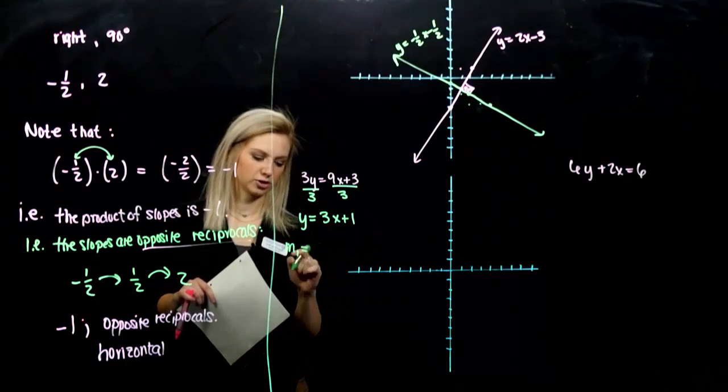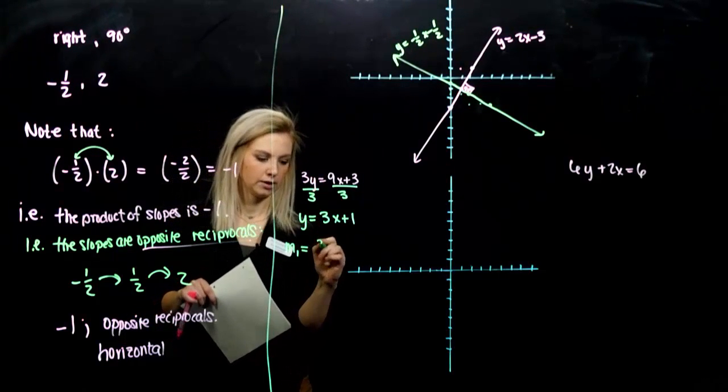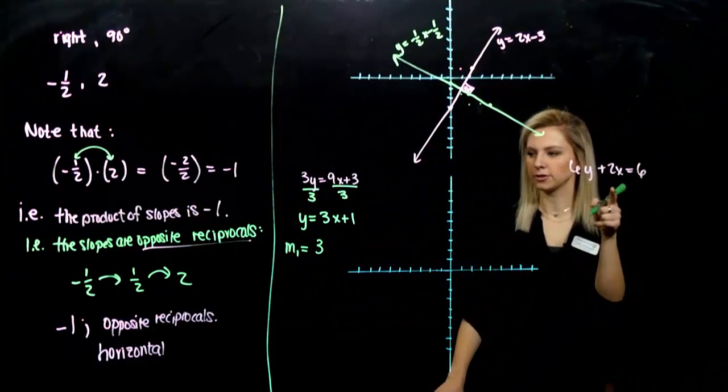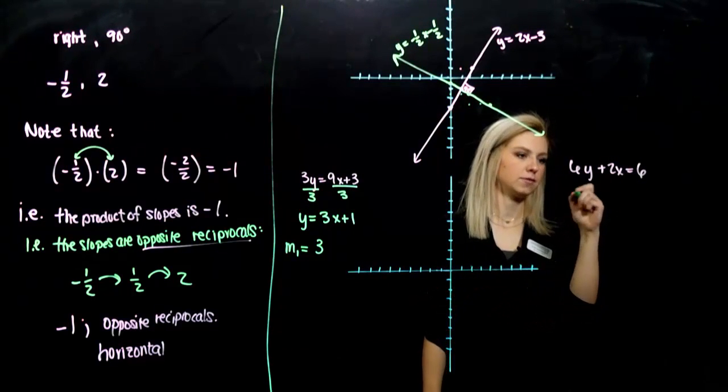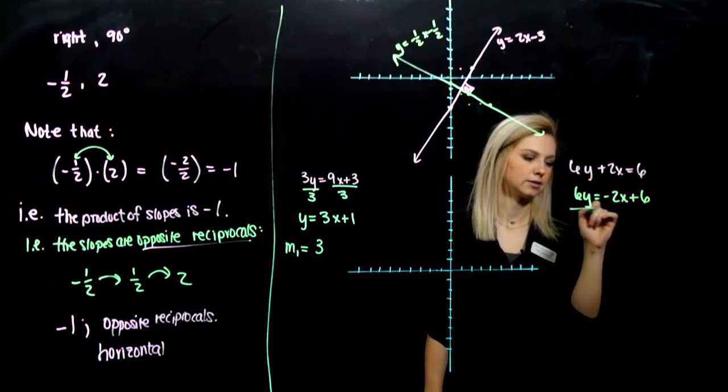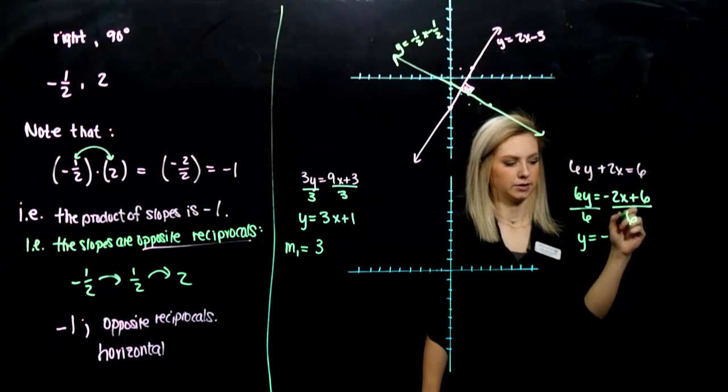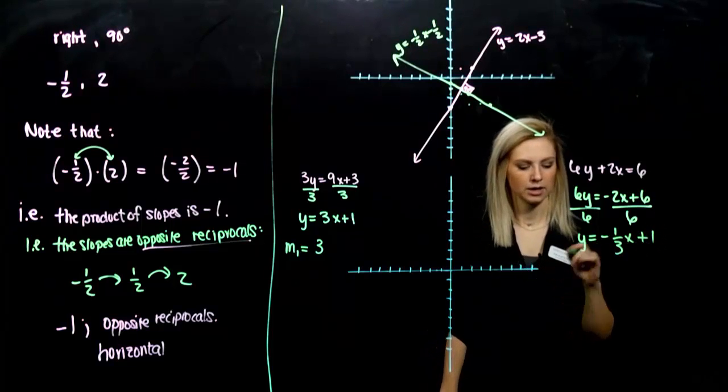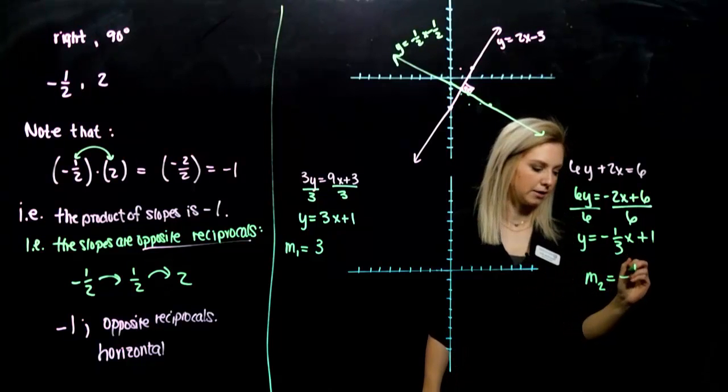So the first slope, I'm just going to call it line 1. A little subscript just tells me I'm starting with the first one. Its slope was 3. And let's solve for the slope intercept form over here, so we can look at and compare the two slopes. So we need to move 2x first. Minus 2x plus 6. Divide by 6 everywhere. y is minus 1. We can simplify that down. 1 third x plus 1. So slope of the second line, m2, is minus 1 third.